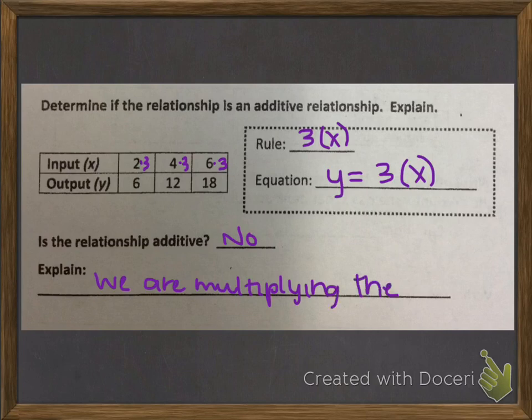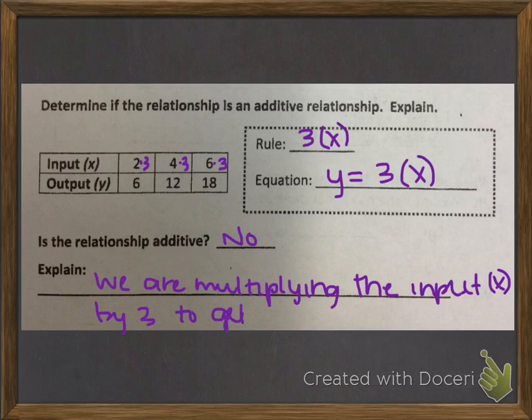We are multiplying the input, which is our x, by 3 to get the output, which is y. And that is not addition, because additive relationships involve addition.